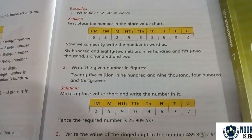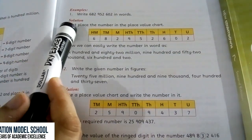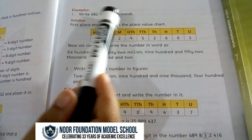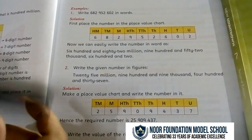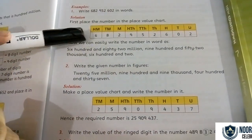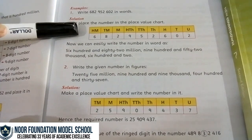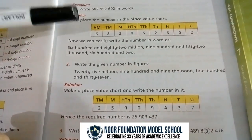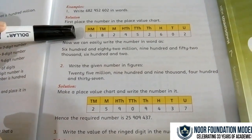Look at page number 3. The first example is: write the number in words. So, you will first write the digits, then put the place values on top, and then write whatever the answer is.